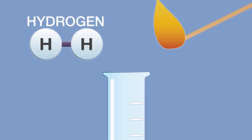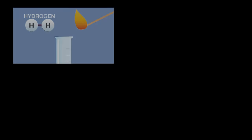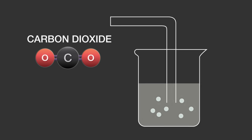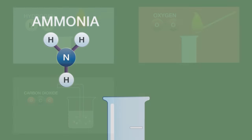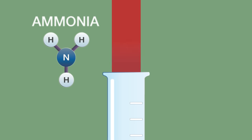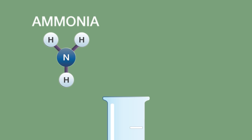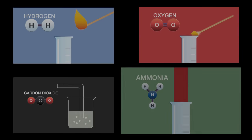In conclusion, hydrogen burns with a squeaky pop. Oxygen relights a glowing splint and carbon dioxide turns lime water milky. Ammonia turns damp red litmus paper blue and forms a white smoke of ammonium chloride in the presence of concentrated hydrochloric acid.